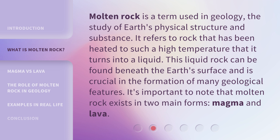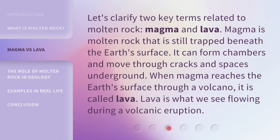It's important to note that Molten Rock exists in two main forms: magma and lava. Magma is molten rock that is still trapped beneath the Earth's surface. It can form chambers and move through cracks and spaces underground.